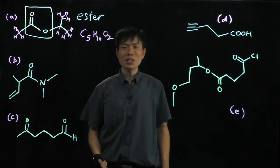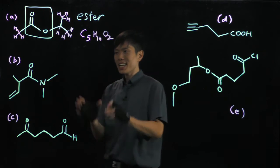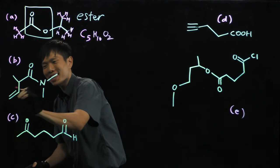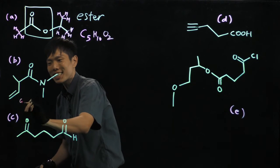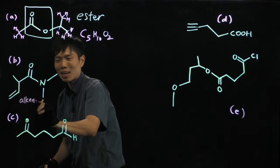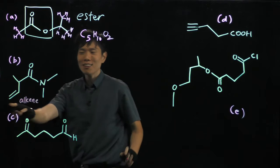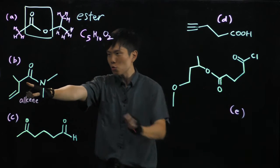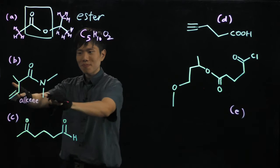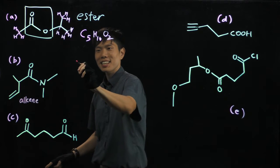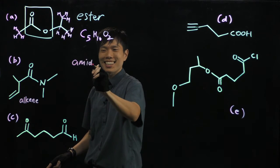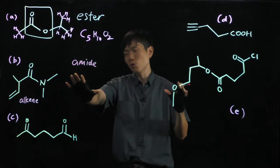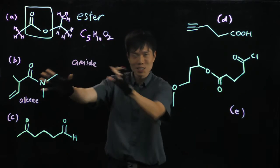Now for molecule B. I zoom in and you'll see — this part is an alkene: C=C double bond, alkene. And there's one more functional group here. This is an amide or amide linkage. So there are two different functional groups in this molecule.